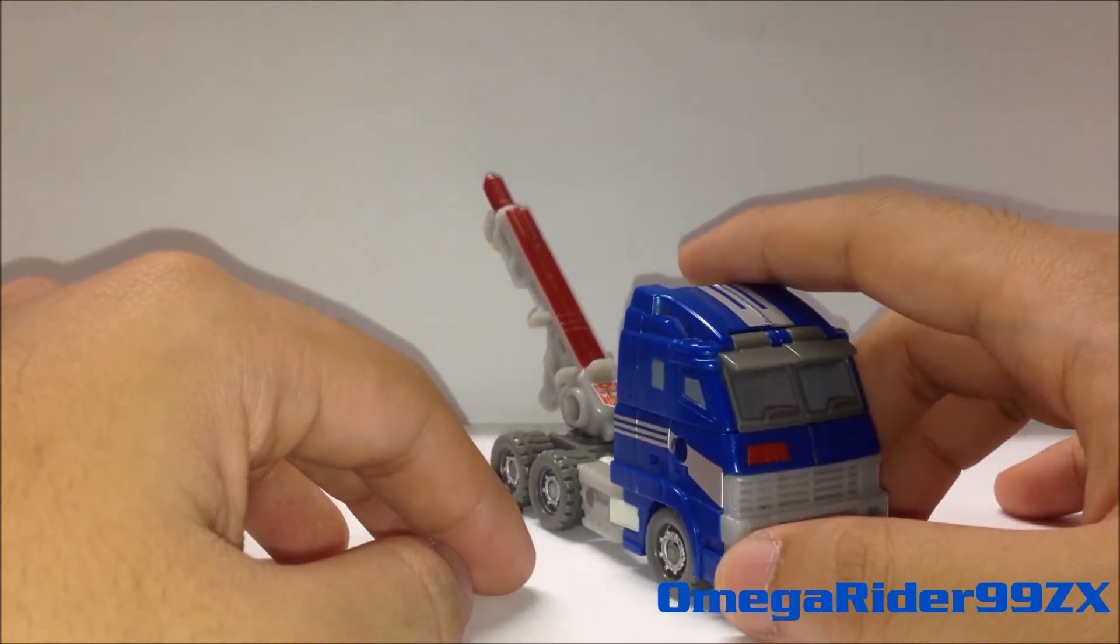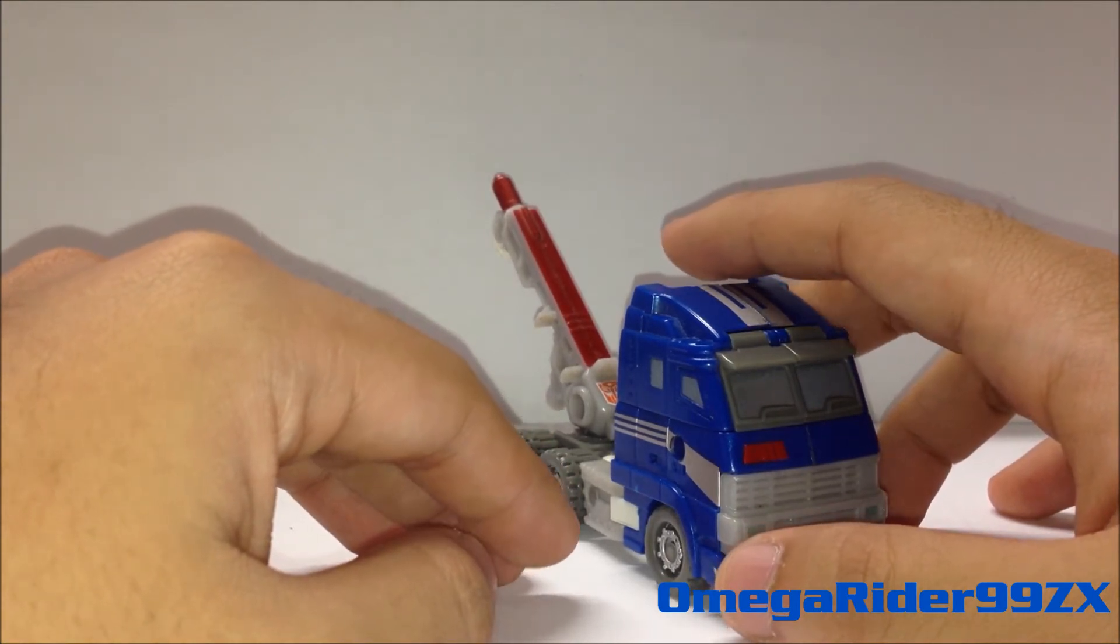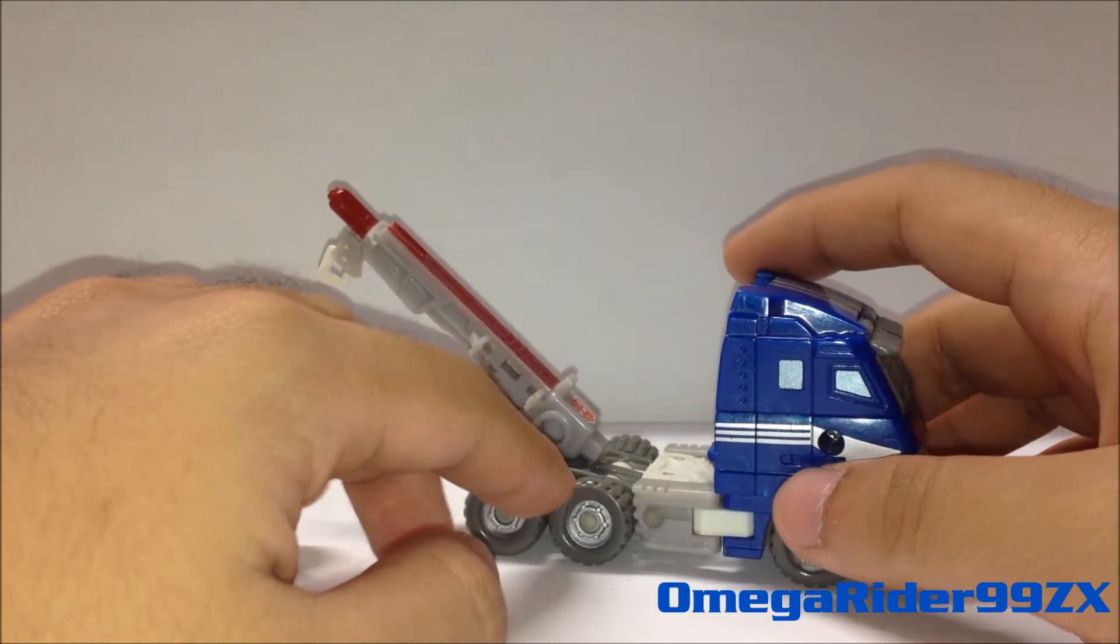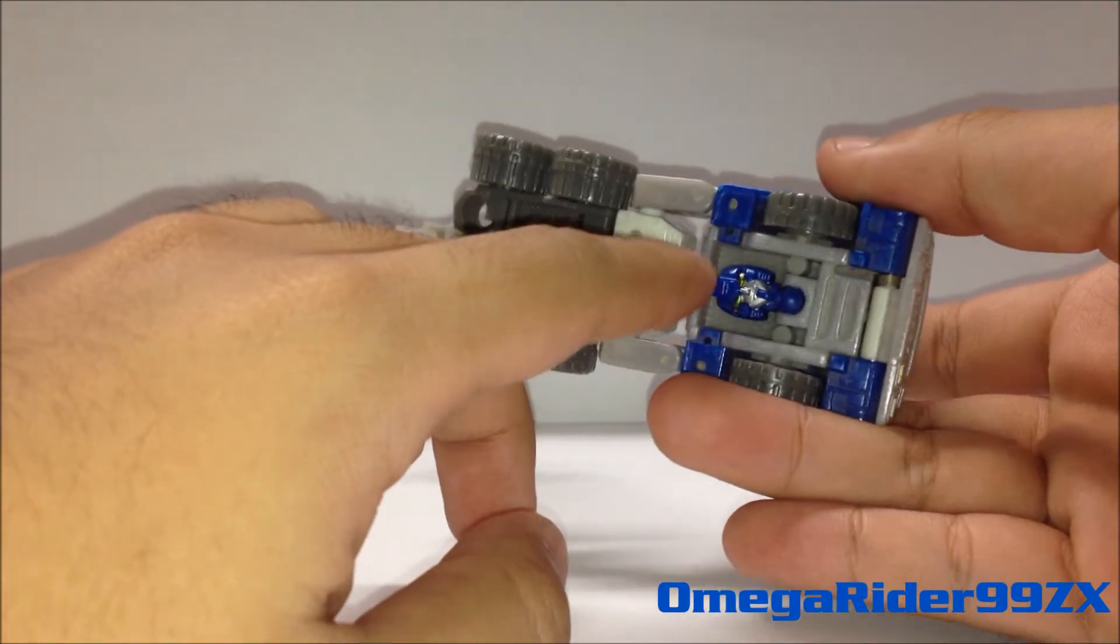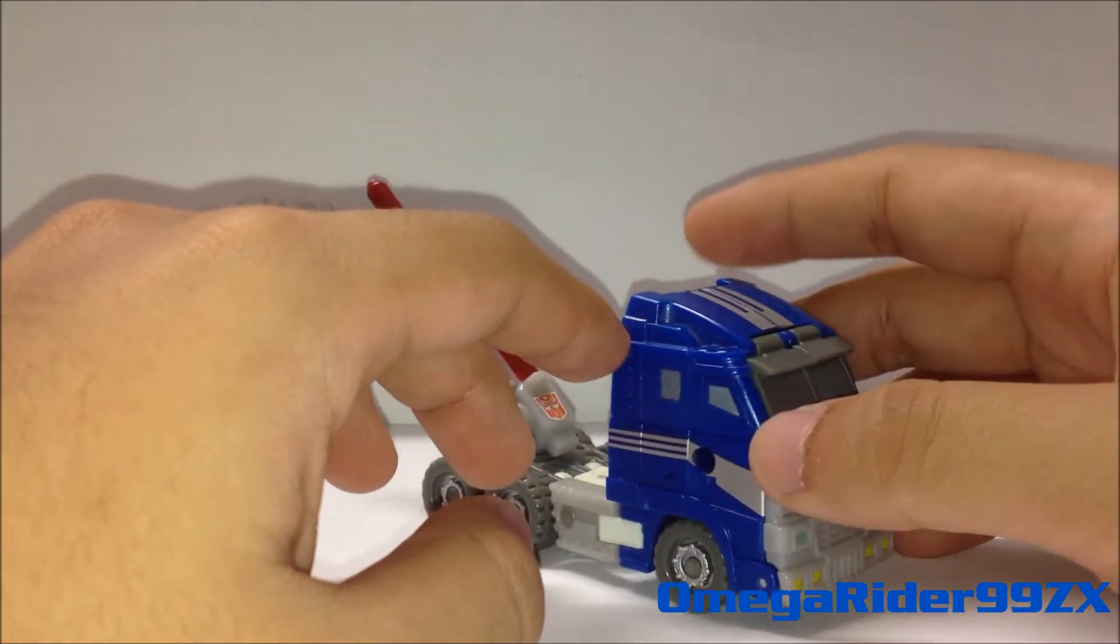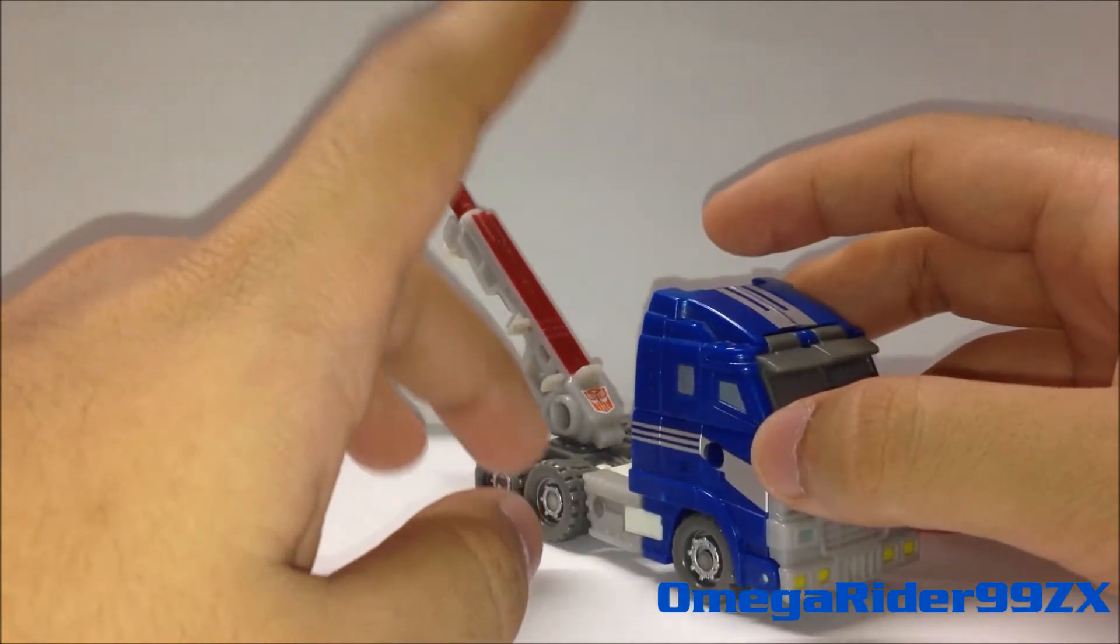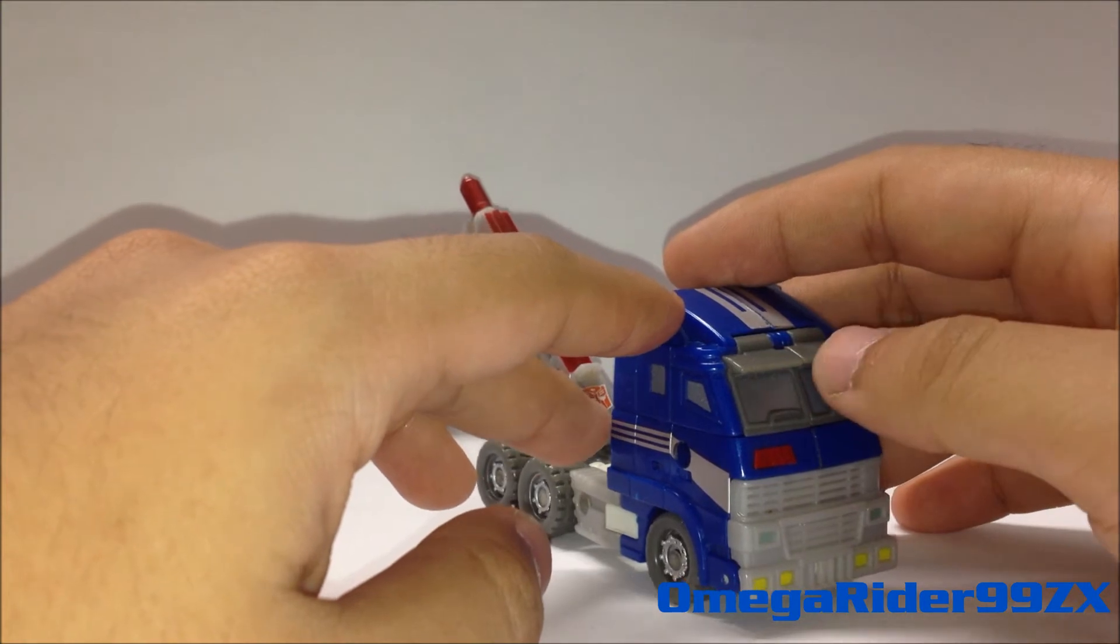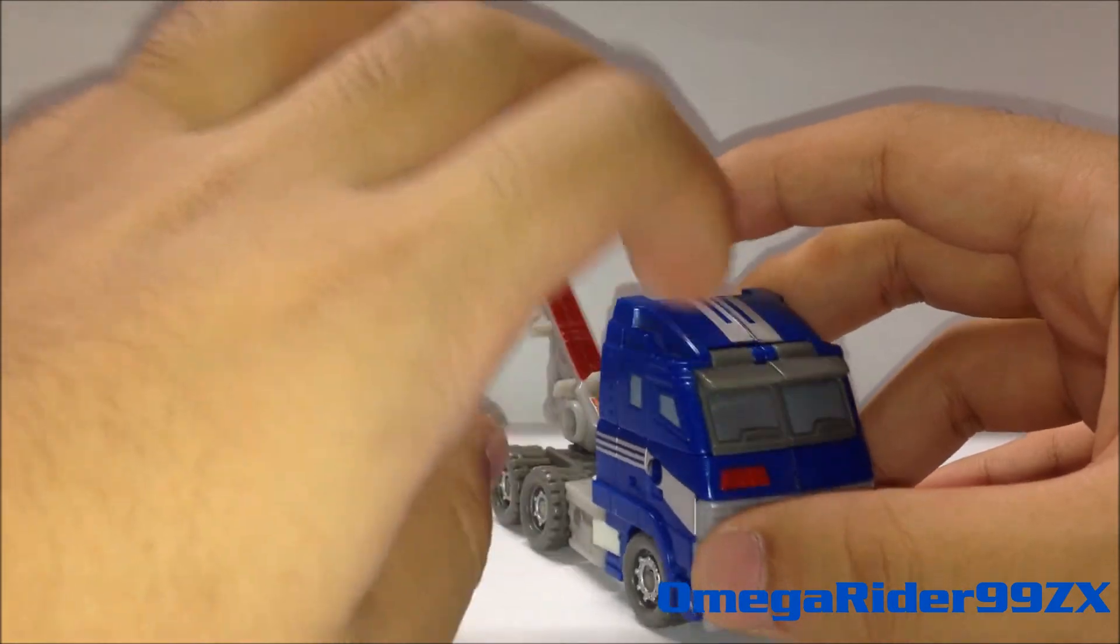The first repaint is BotCon 2007 Autobot Fallback. Fallback is colored orange right here, orange right here and right here. Right here, right here, right here is purple, the head purple too, head purple. It also transformed movie line, and Target exclusive repaint is colored black.